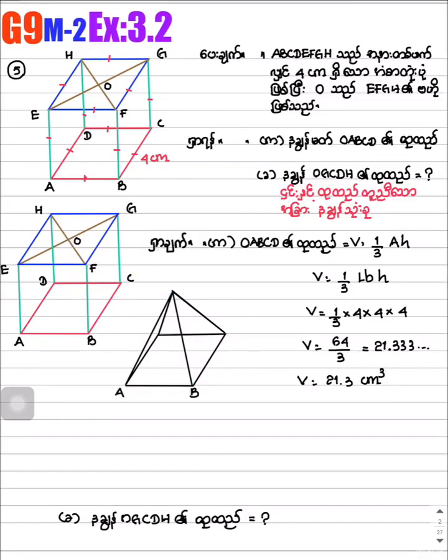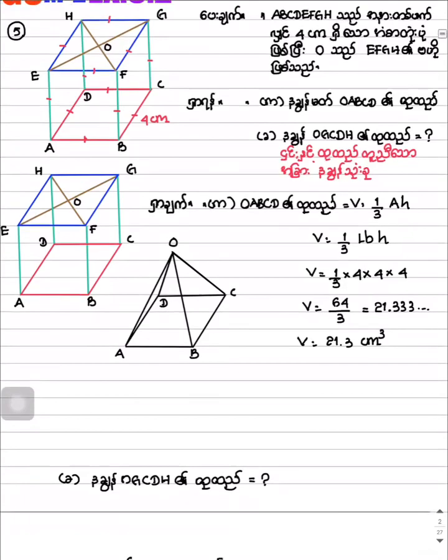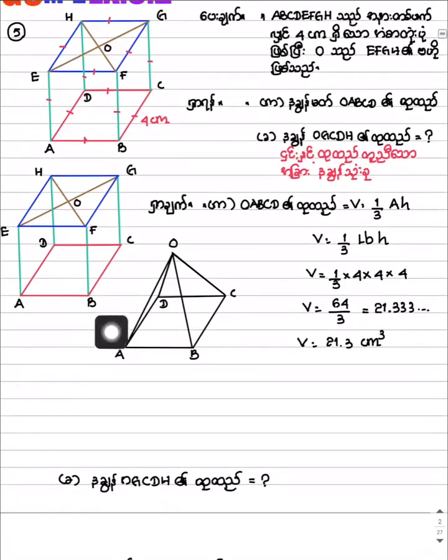The volume O, E, B, C, D, and O. The volume V is equal to 1/3 E H. V is equal to 1/3 lb H. So we have V is equal to 1/3 times 4 times 4.